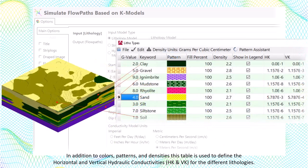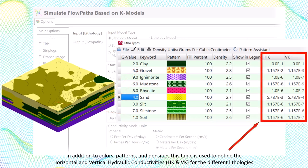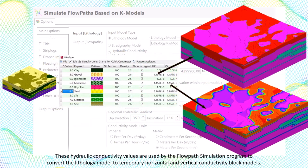In addition to colors, patterns, and densities, this table is used to define the horizontal and vertical hydraulic conductivities for the different lithologies. These hydraulic conductivity values are used by the flow path simulation program to convert the lithology model to temporary horizontal and vertical conductivity block models.